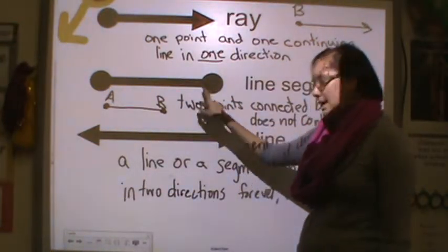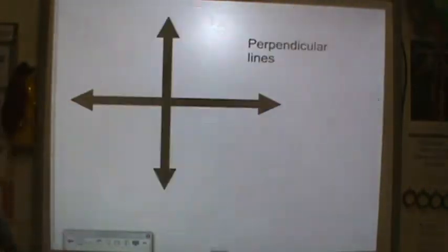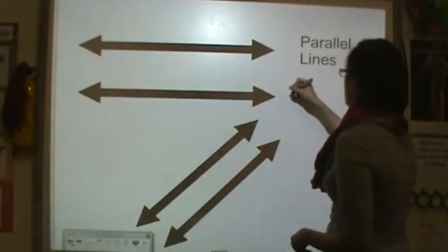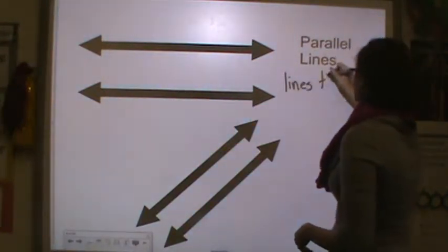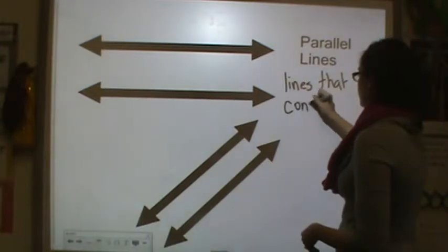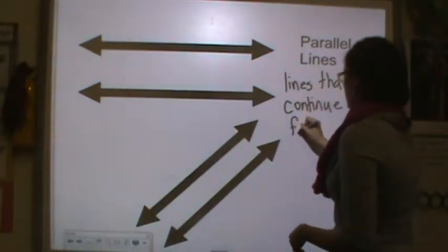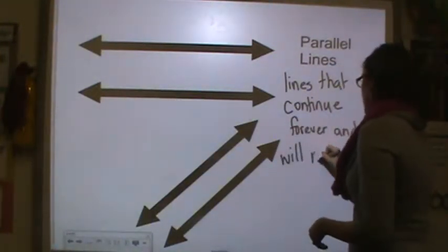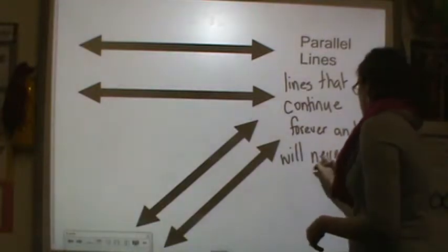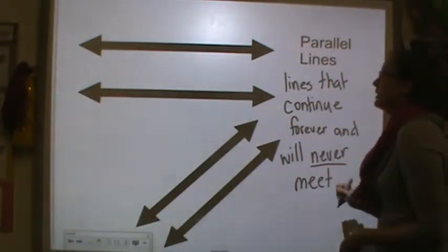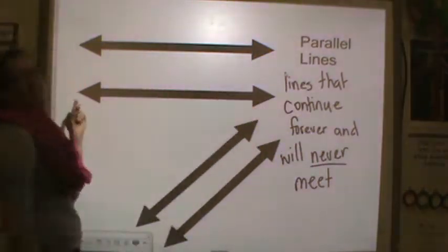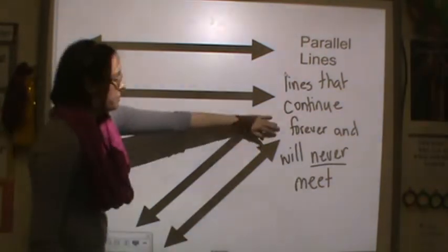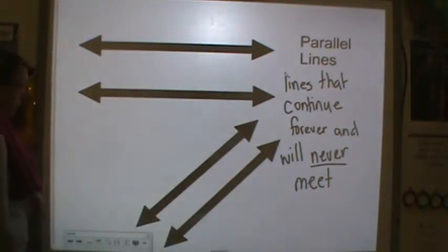The next term I would like to talk about is parallel lines. Parallel lines are lines that continue forever and will never meet. So these lines, if they were to continue on forever, they would never touch each other — they keep going in the same direction forever and ever. These are also parallel lines; they'll continue forever and ever and they will not touch.